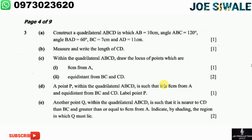Let us start the question. Question 3a reads: construct a quadrilateral ABCD in which AB is equal to 10 centimeters, angle ABC is equal to 120 degrees, angle BAD is equal to 60 degrees, BC is equal to 7 centimeters, and AD is equal to 11 centimeters. That's one mark. So I need to draw quadrilateral ABCD.